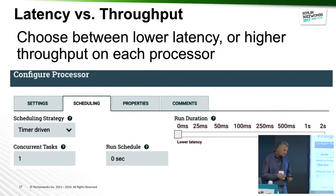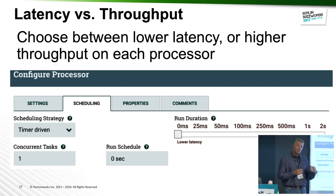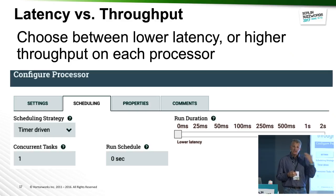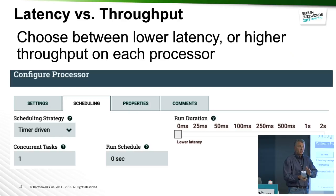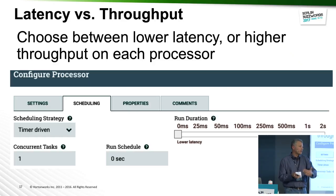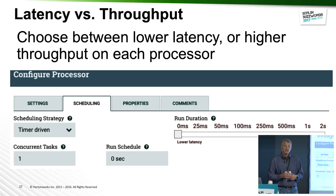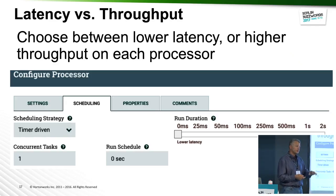Latency versus throughput is configurable on a per-processor basis. It gives NiFi a suggestion as to whether that processor should have lower latency — in which case every time there's a flow file in a connection it gets a chance to execute — or higher throughput, treating it more like a batch. Moving the slider toward one or two seconds means NiFi will gather the number of flow files in that connection over about that amount of time and then schedule that processor to run on a batch. Skewing toward lower latency runs the processor every single time there's a flow file.